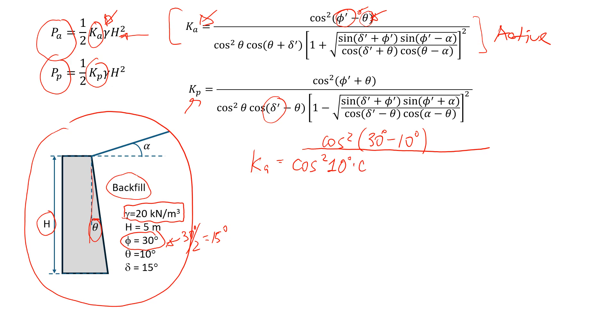Then times cosine, here we have 10 degrees, which is angle theta plus that friction between soil and the retaining wall, which is 15. Then we're going to have this component, which is 1 plus,